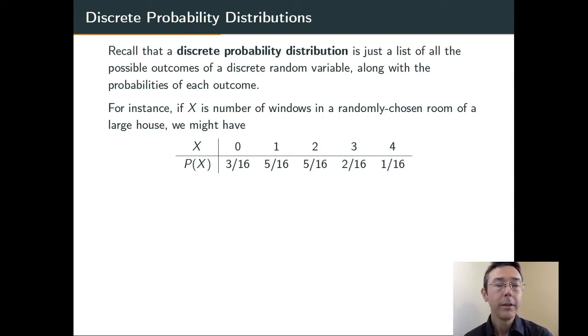And the probabilities that when we select a room at random of getting that many windows are 3/16, 5/16, and so on. This is a discrete probability distribution.